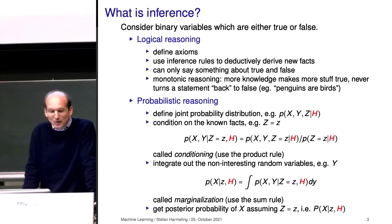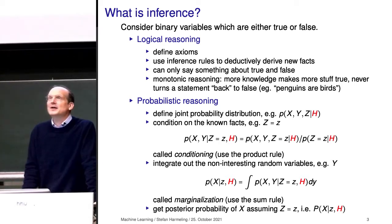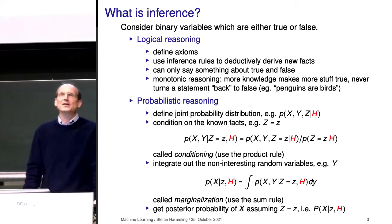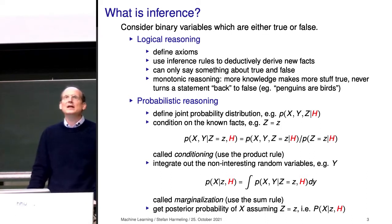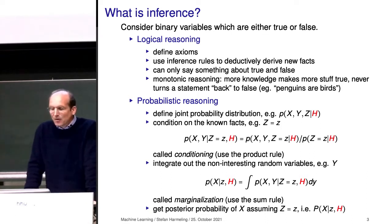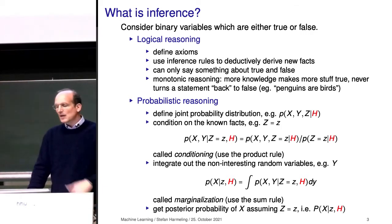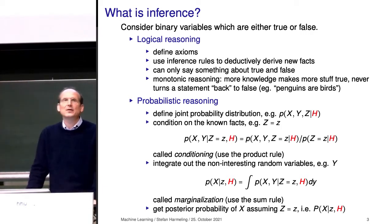Now, what is inference? These words — inference, reasoning — are super overloaded. Every branch of science has their own inference and their own reasoning. When we talk about inference, we can distinguish between logical reasoning and probabilistic reasoning. In logical reasoning, you have binary variables that are either true or false, also sometimes called propositional variables.